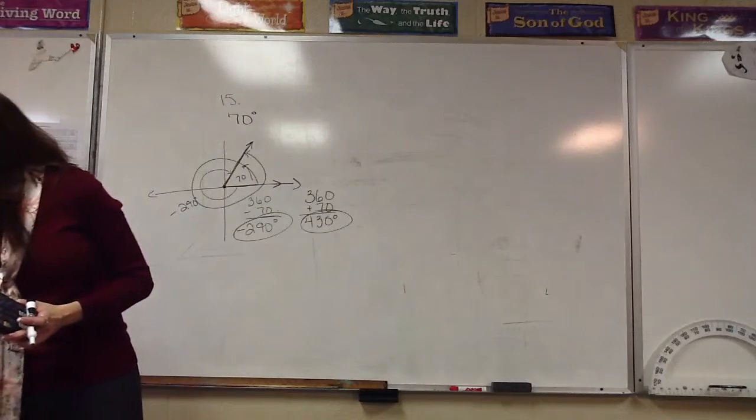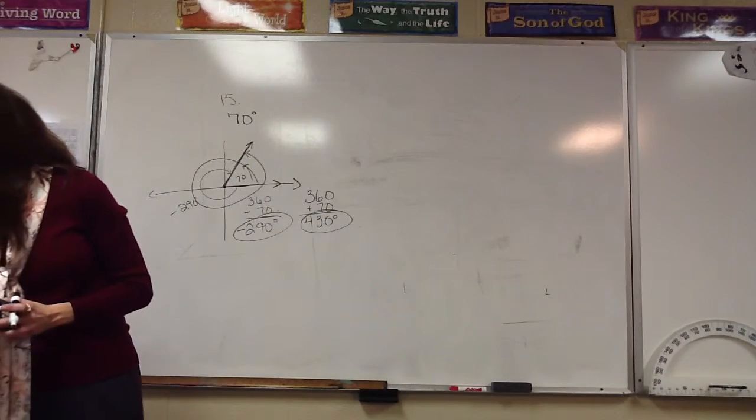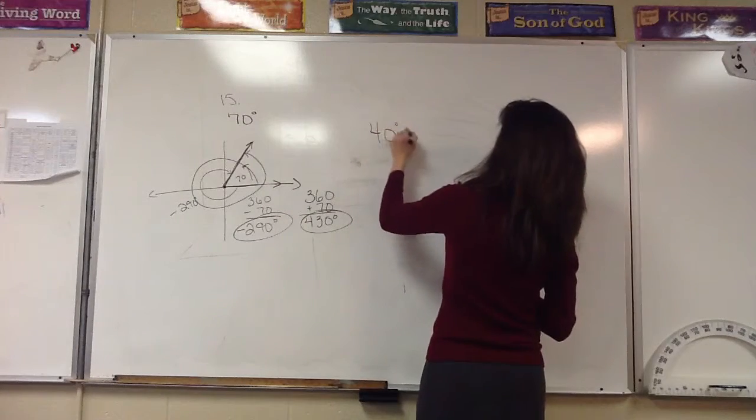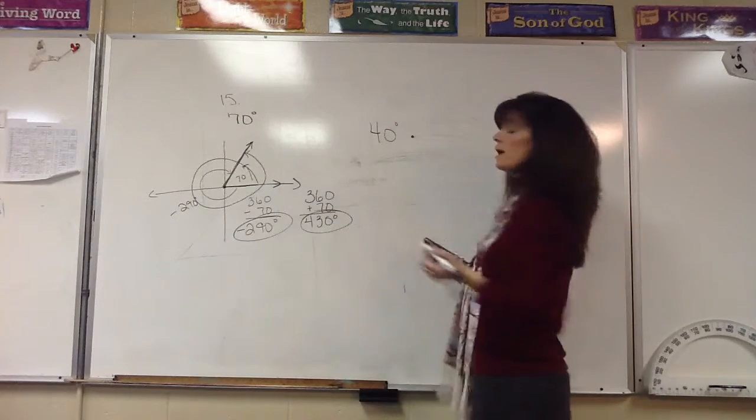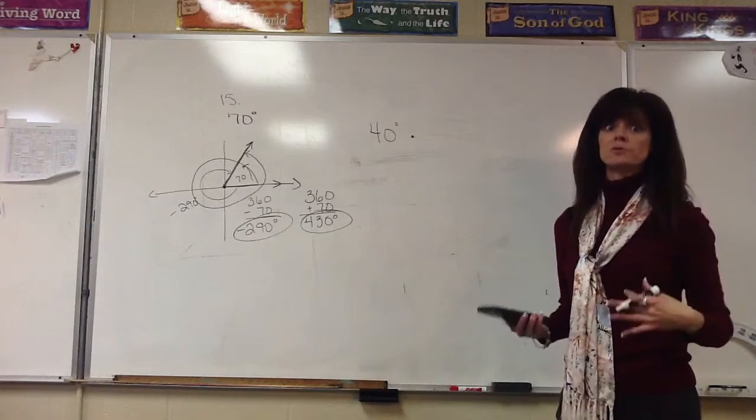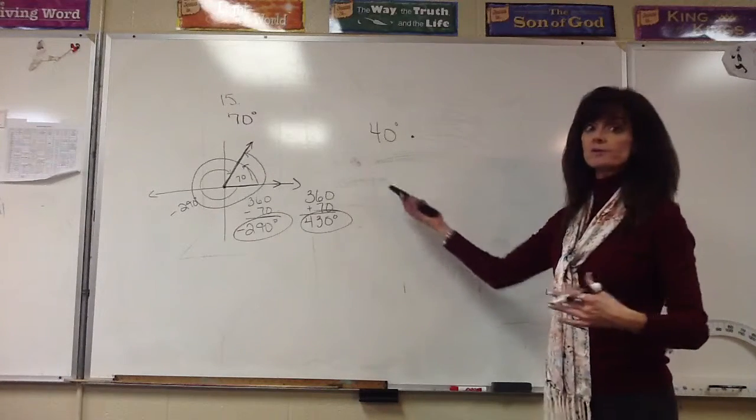Now, if we look at number 23, we want to convert 40 degrees to radians. Remember, I always said it's going to be pi over 180 or 180 over pi, and whatever you want to eliminate should go in the denominator. Well, I want to get rid of the degrees.